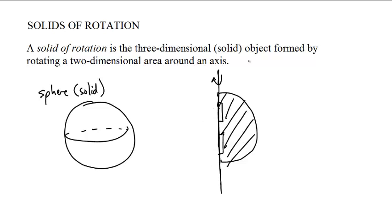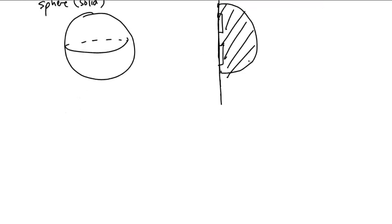Anyway, other examples. A cone. A cone can be formed, well, let's say we rotate a triangle. If we rotate a triangle around a particular axis,